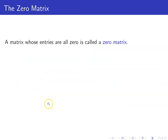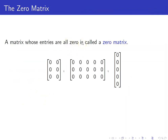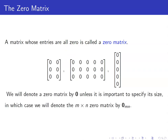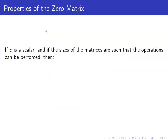Next, we are going to talk about the zero matrix. It is a matrix whose entries are all zero. Here are some examples of a zero matrix. We will denote a zero matrix by bold zero, just to denote that it is a matrix and not the zero real number. Unless it is important to specify its size, we will use this notation; however, if we want to denote its size, we will use the notation 0-sub-mn.